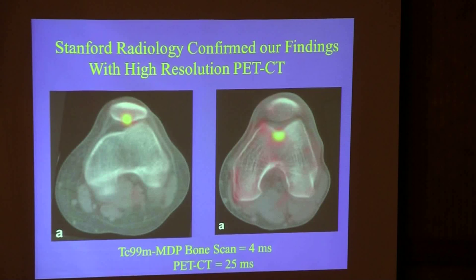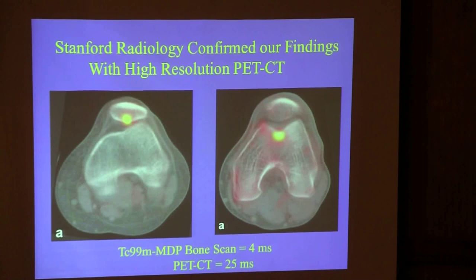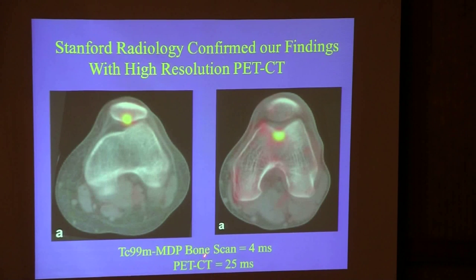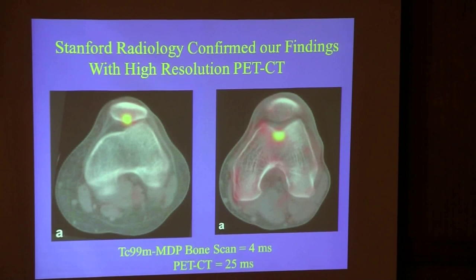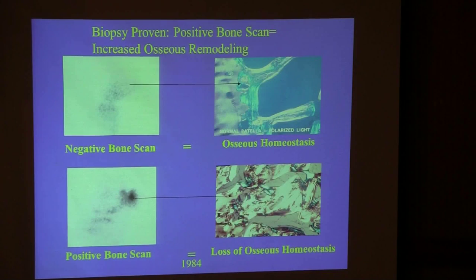Something changed metabolically to normalcy in these patients as pain resolved. The same process has now been confirmed by Stanford Radiology with high-resolution PET-CT, showing the same process at higher resolution. However, I still think the technetium bone scan will be the standard of use to find this process, as PET-CT has six times higher radiation exposure and is much more expensive.